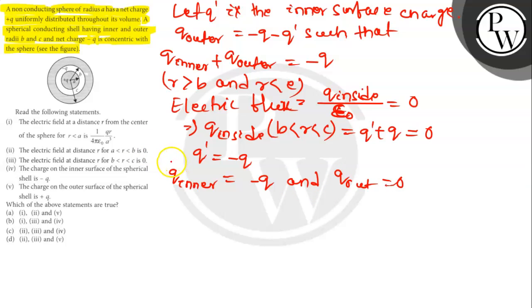Electric field for R < A: E times 4π R² equals Q_inside divided by epsilon_0.